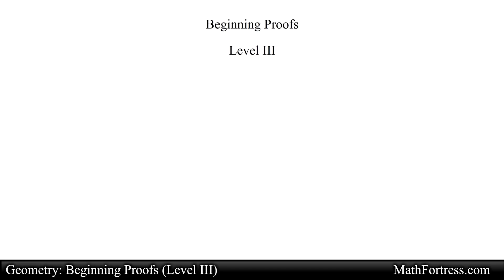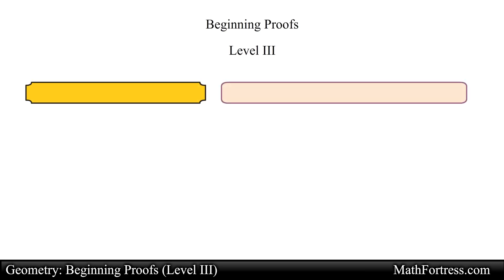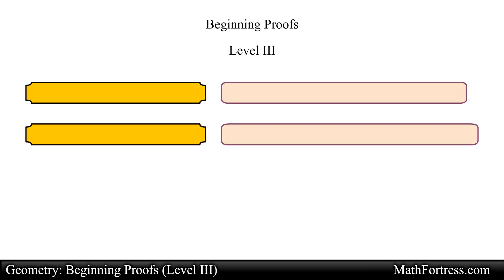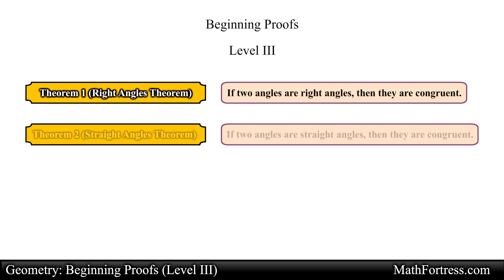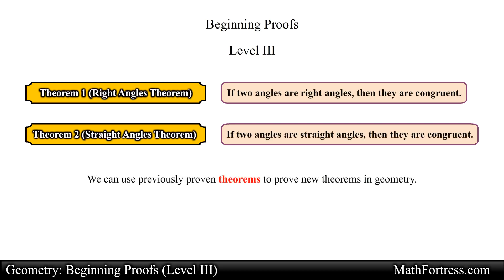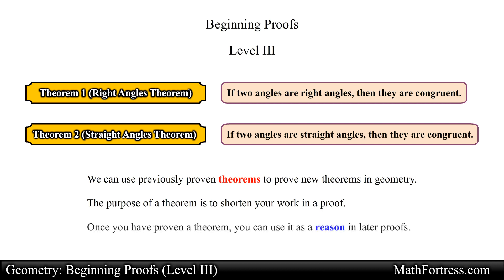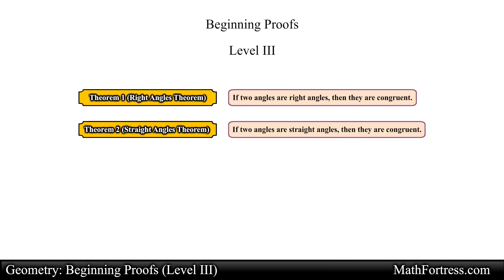Beginning Proofs Level 3. In the previous video we proved our first two theorems in geometry: the right angles theorem and straight angles theorem. We can use previously proven theorems to prove new theorems in geometry. The purpose of a theorem is to shorten your work in a proof. Once you have proven a theorem you can use it as a reason in later proofs. Let's go over the next example to illustrate how this is done.